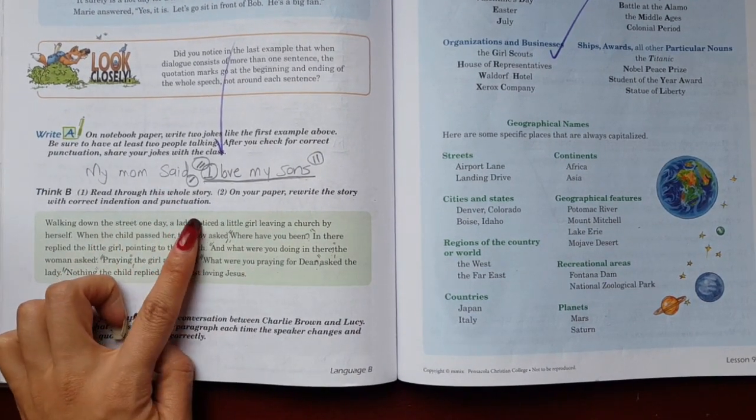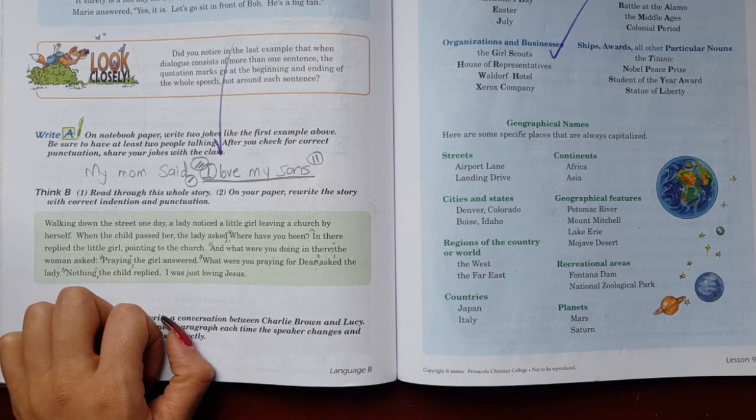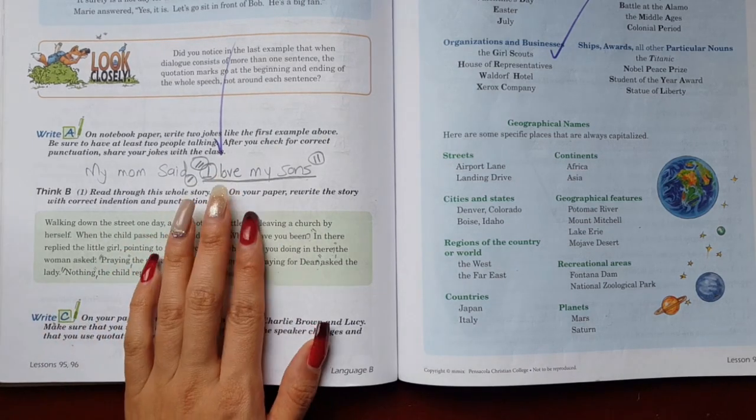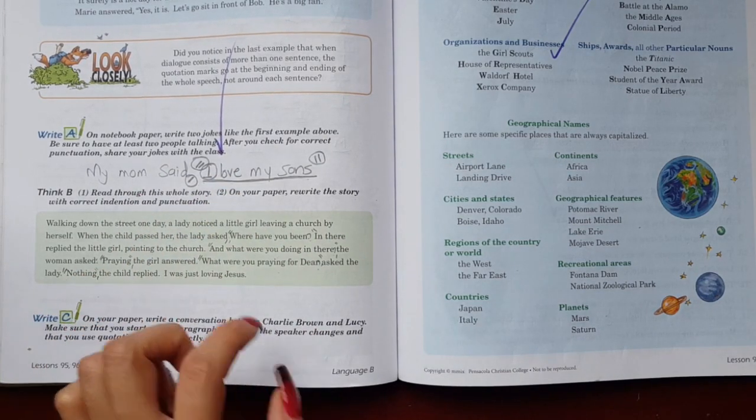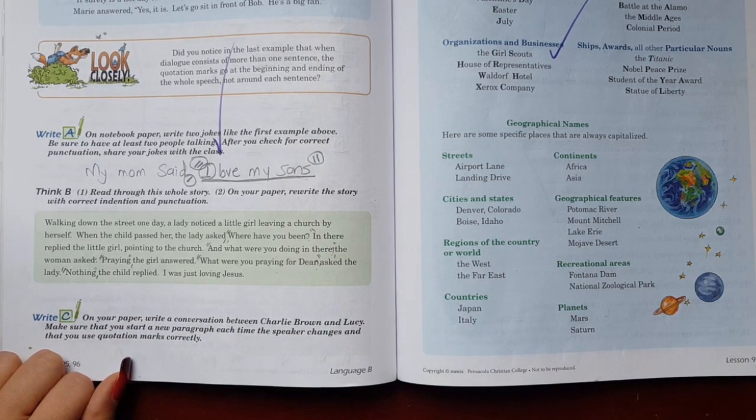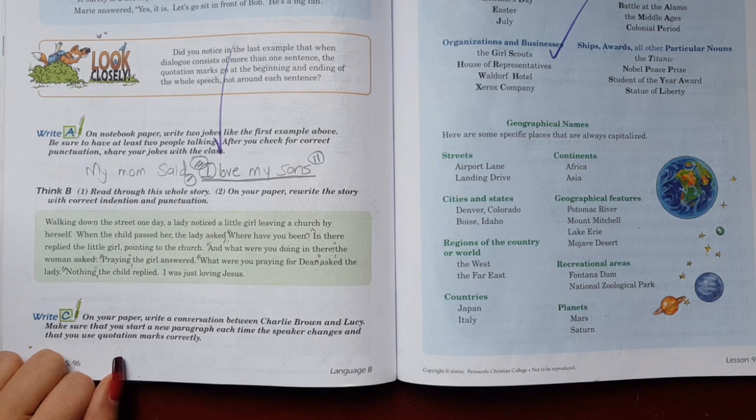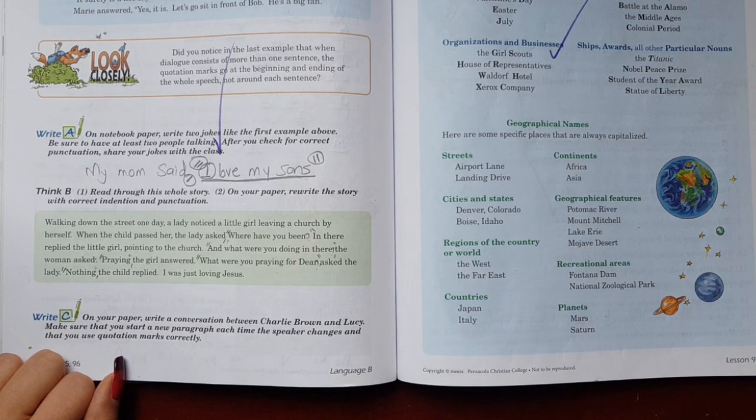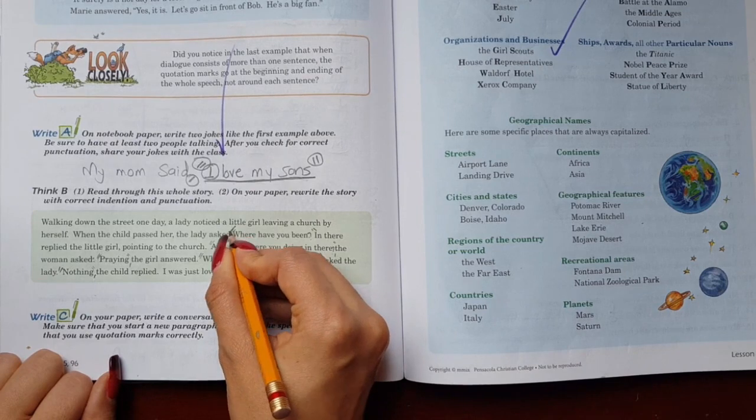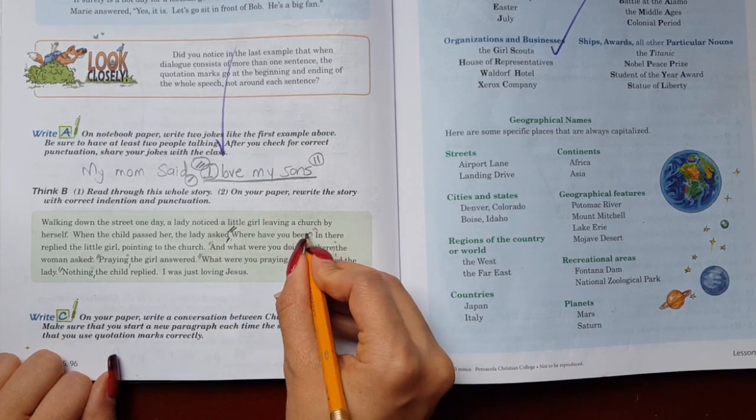Here it says, read through this whole story. On your paper, rewrite the story with correct indentation and punctuation. We're going to put the best punctuation here on this. It says like this, walking down the street one day, a lady noticed a little girl leaving a church by herself. When the child passed her, the lady asked.